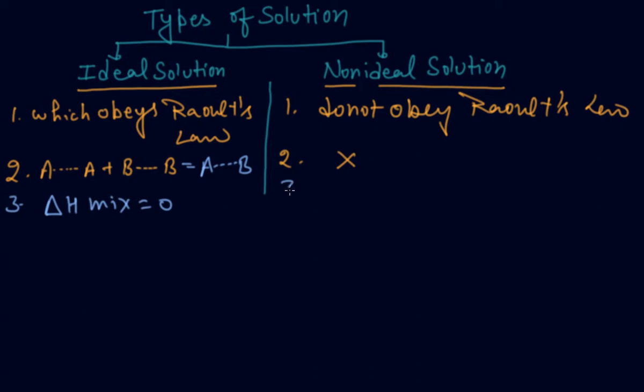Fourth one is that delta V of mixing in the ideal solution becomes zero, whereas delta V of mixing in the non-ideal solution never becomes zero. So these are the two types of solutions: ideal solution and non-ideal solutions.